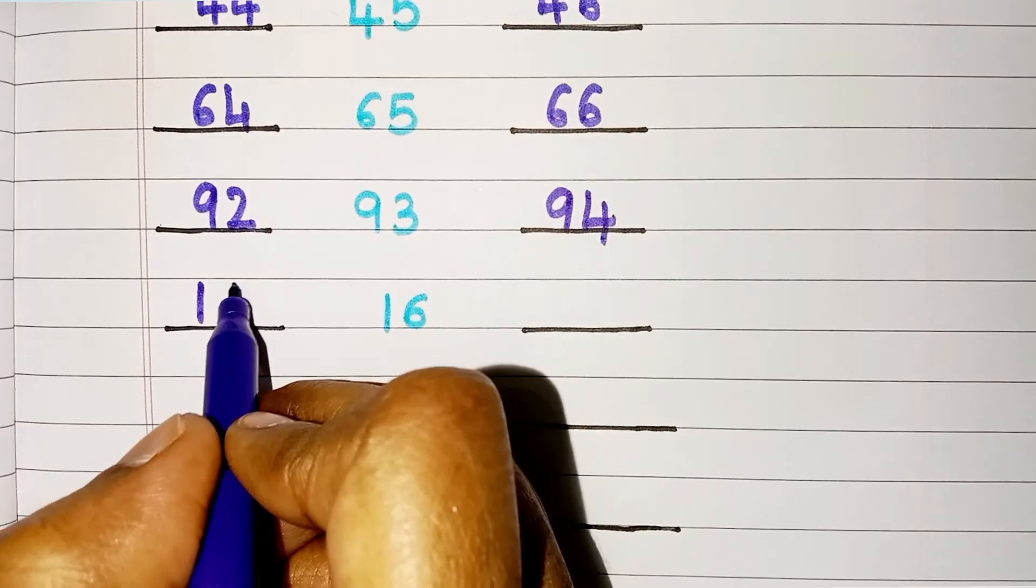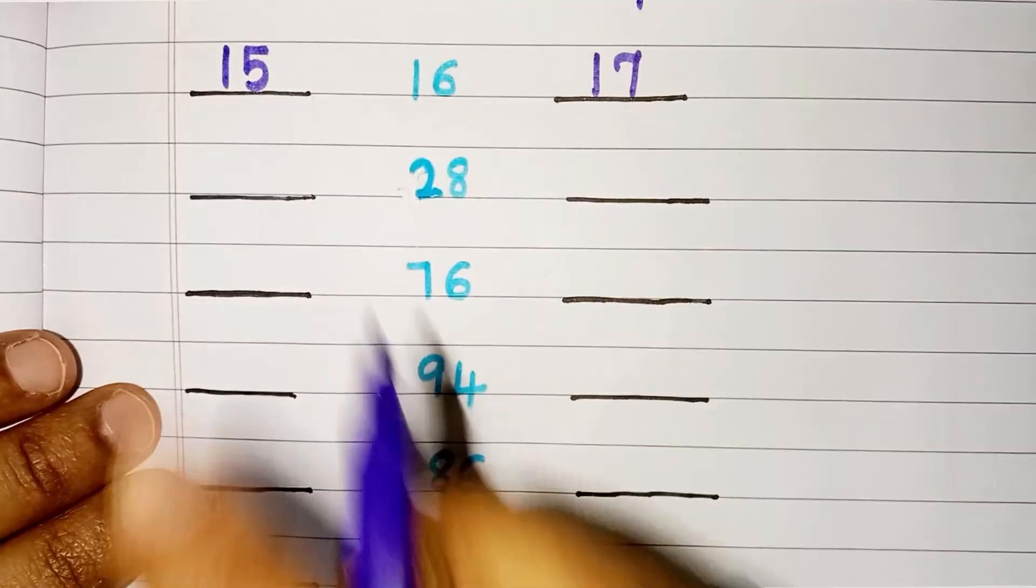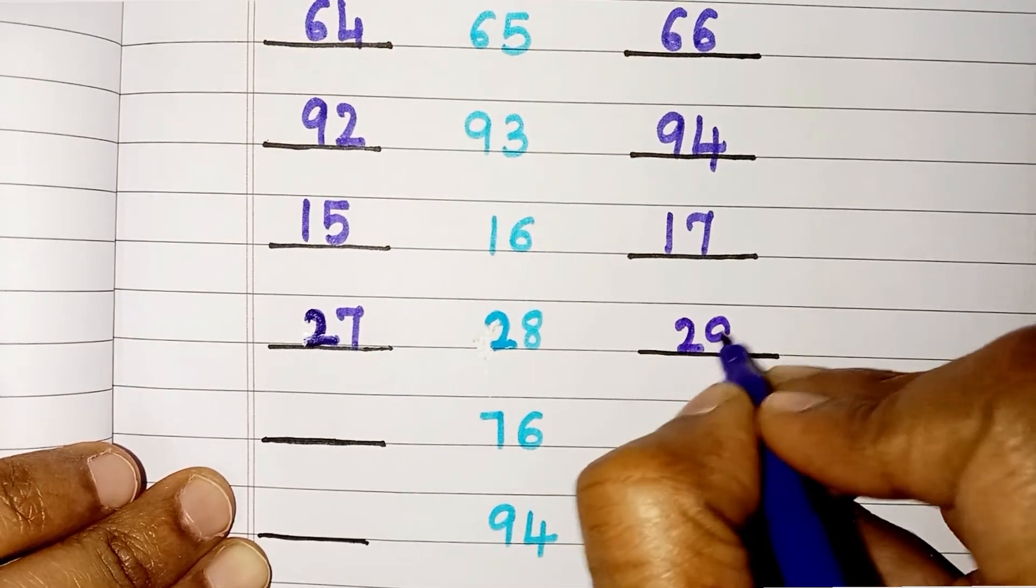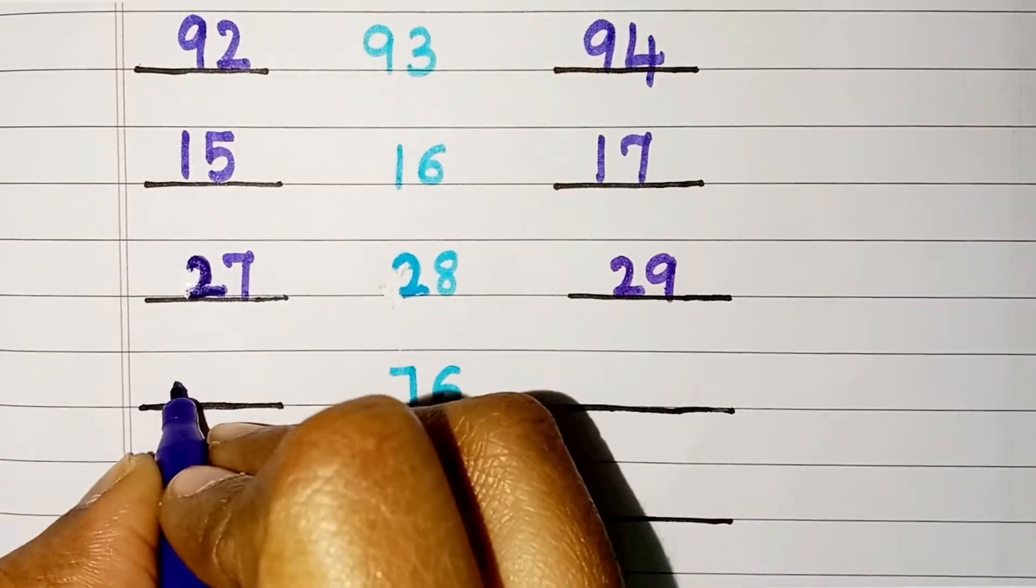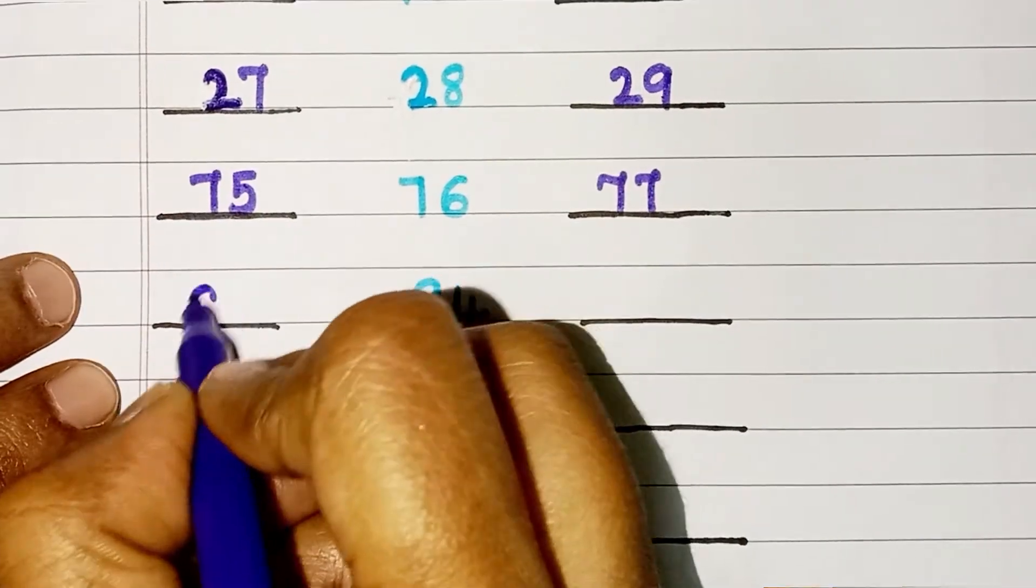Number before 16 is 15. After 16, 17. Number before 28 is 27. After 28, 29. Before 76, 75. After 76, 77.